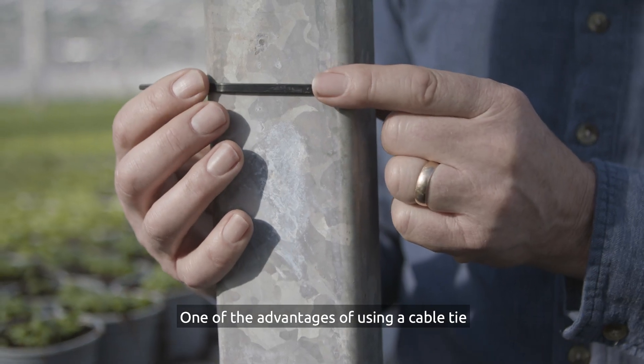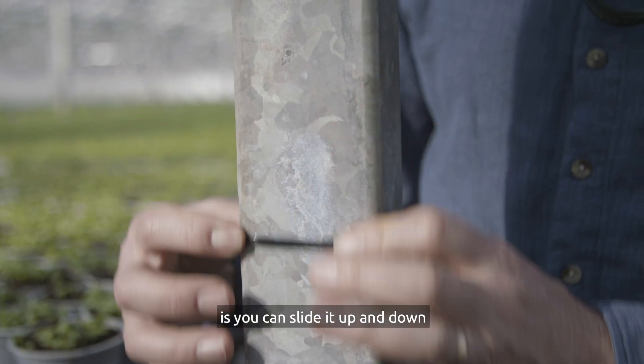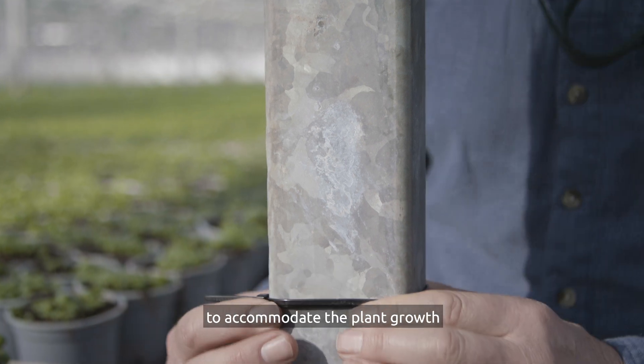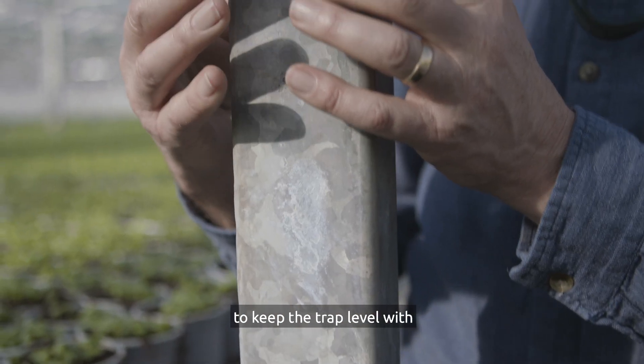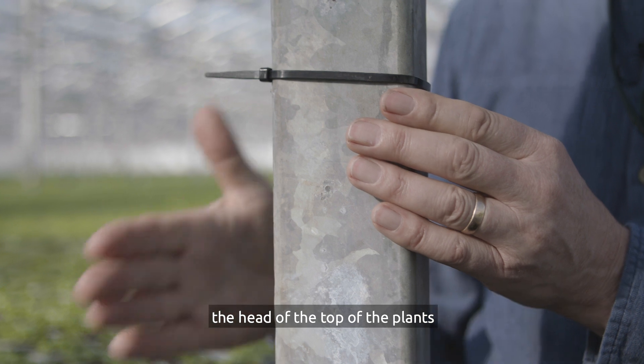One of the advantages of using a cable tie is that you can slide it up and down to accommodate plant growth and keep the trap level with the top of the plant.